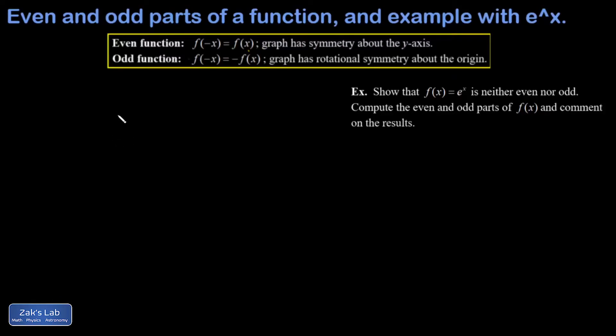In this video we're going to show that any function can be written as a sum of an even function and an odd function. Just to remind you, an even function is a function for which f of negative x is equal to f of x, and the graph of an even function would have symmetry about the y-axis.